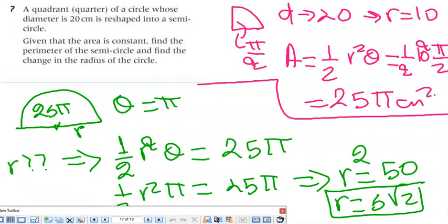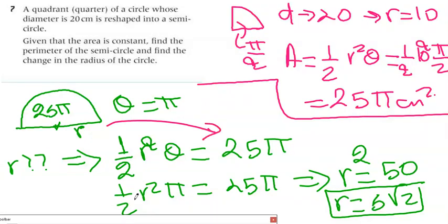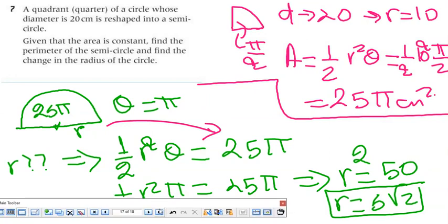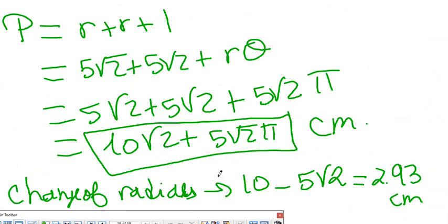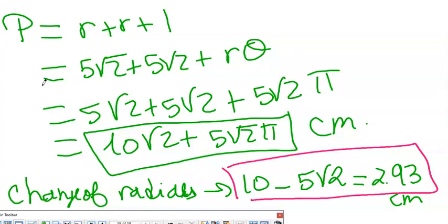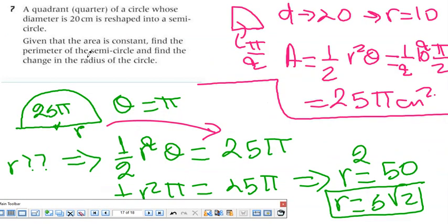Number 7: I have a quarter circle, so the angle is π/2, with diameter 27, meaning radius is 10. I want to inscribe it in a semi-circle with the same area. The area of the quarter sector is ½r²θ = 25π. Setting ½R²θ = 25π and solving gives R = 5√2. The change in radius is 10 − 5√2, and then I can find the perimeter of the new semi-circle.